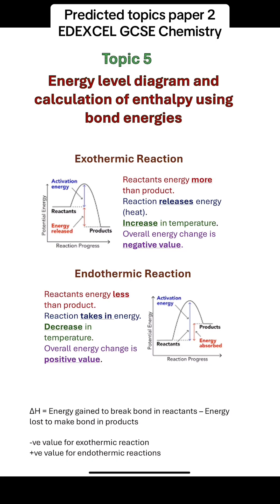Topic 5 is energy level diagrams and calculation of enthalpy using bond energies. You should be able to differentiate between exothermic and endothermic reactions. For an exothermic reaction, the reactant energies are higher than the product energy. The activation energy is the difference between the energy of the reactants and the top point of the graph, and the overall energy change is the difference between the energy of the reactants and the products. For an exothermic reaction, energy is released as heat, so there is an increase in temperature, and the overall energy change is a negative value.